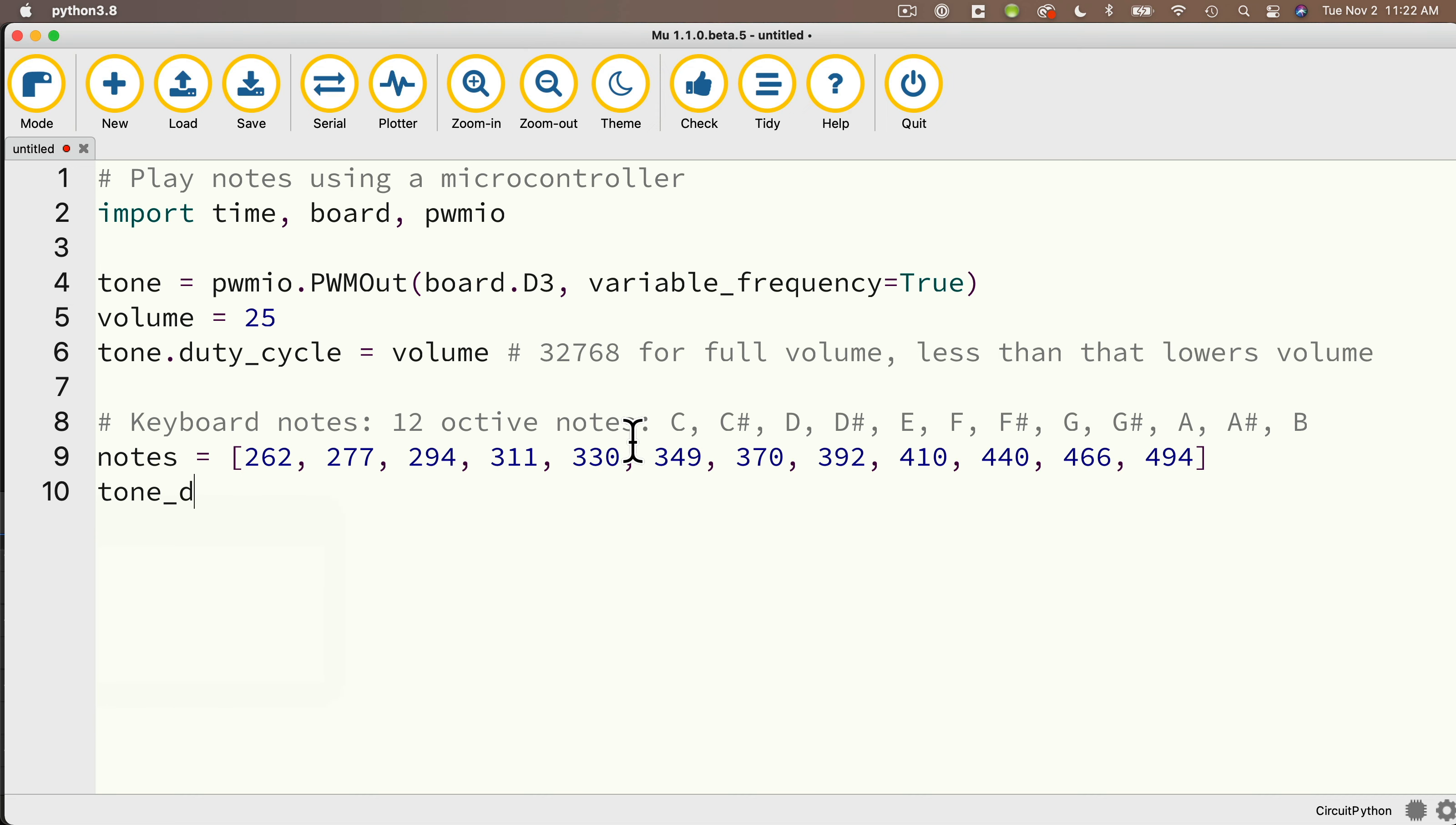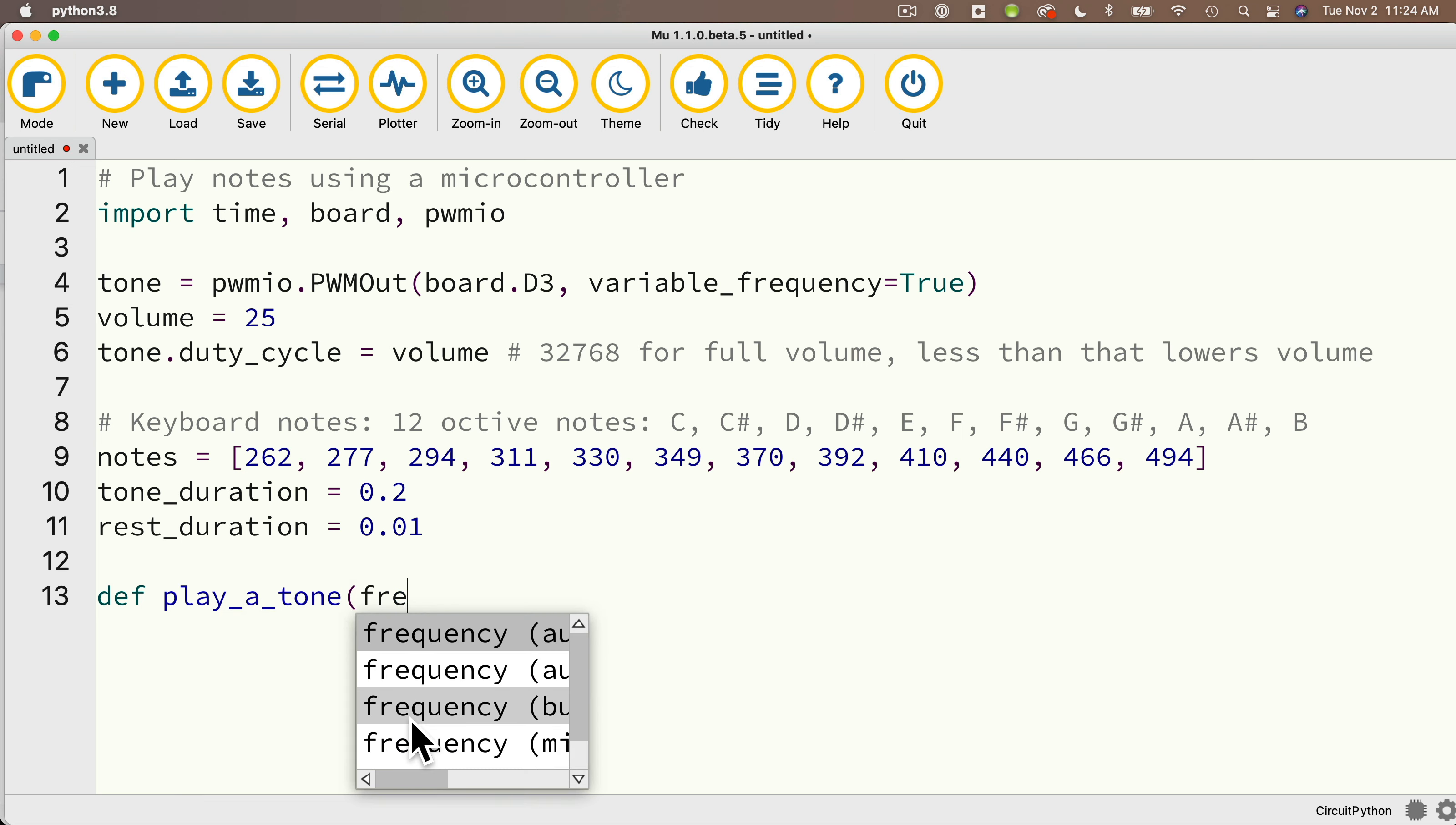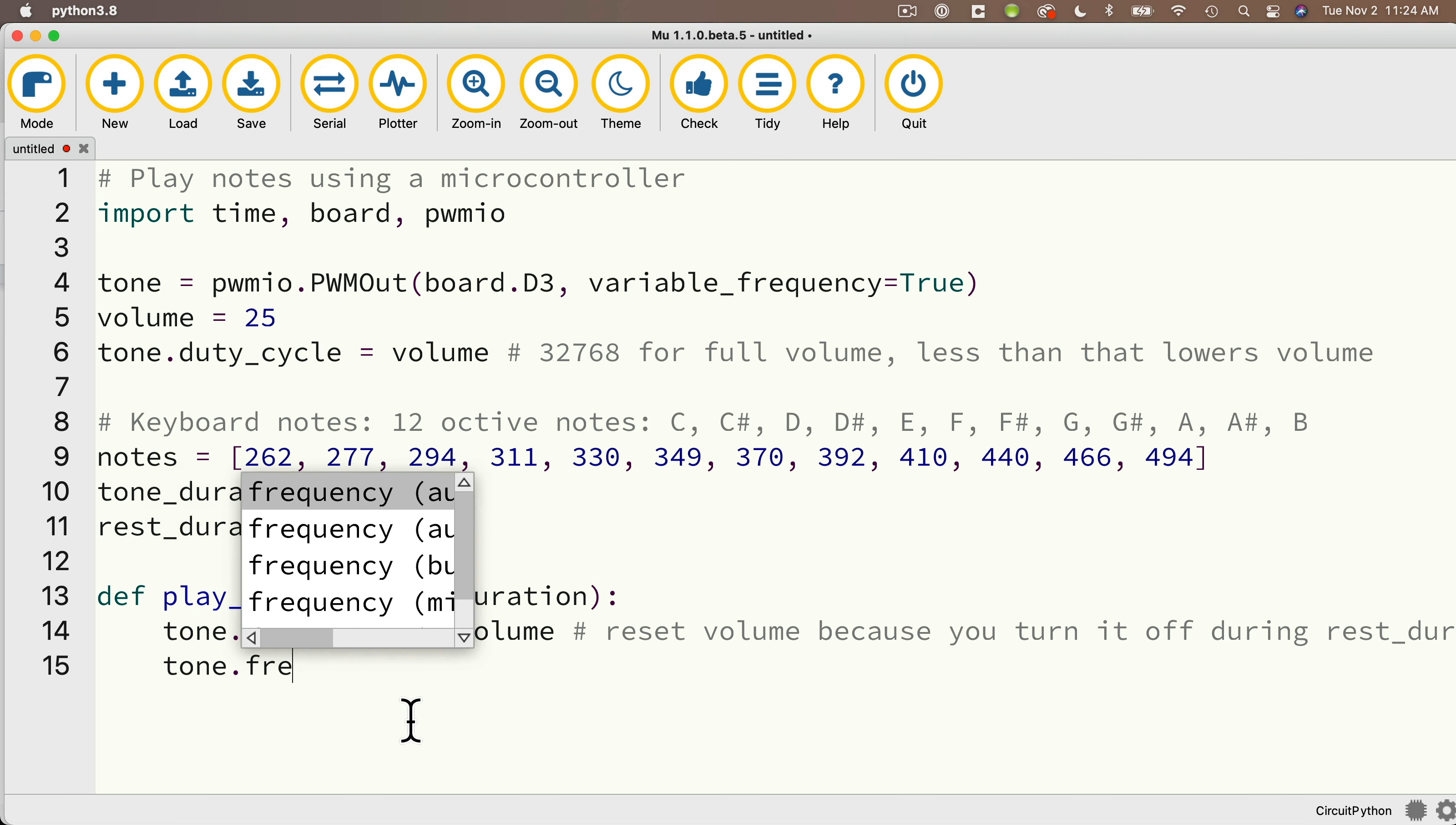Then we're going to create a variable called tone_duration, and we'll set that equal to 0.2. Feel free to vary that if you want your notes to change in duration. We're also going to add rest_duration equal to 0.01. Feel free to vary that if you want longer rests between your notes. Then we're going to create our first function. We'll define it, DEF, as play_a_tone. We're going to pass in two values: freq, F-R-E-Q, comma duration. Make sure those two values are between parentheses and you've got a colon at the end. We're going to set tone.duty_cycle equal to volume. The reason that you need to do that is you turned it off during the rest function below. Then we'll set tone.frequency equal to freq, and time.sleep in parentheses duration. So that's going to play the note for the duration.